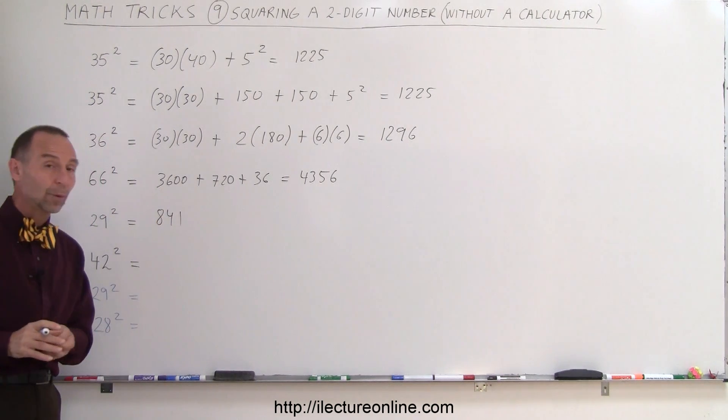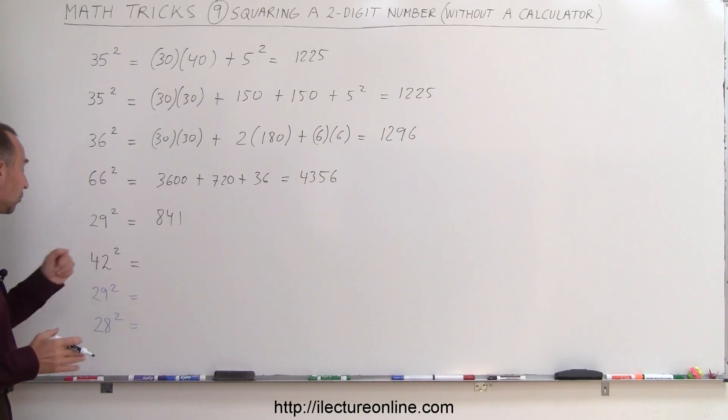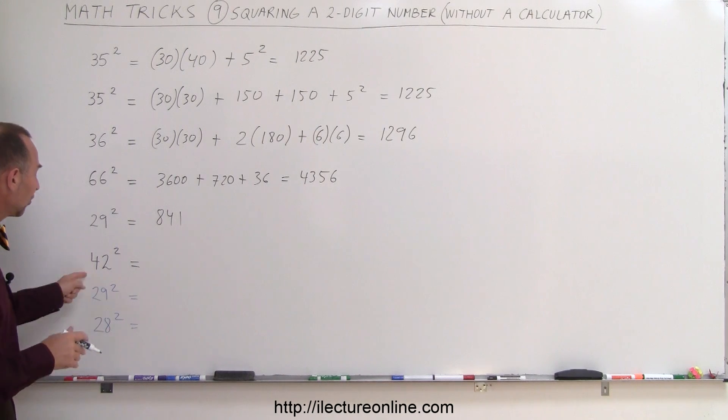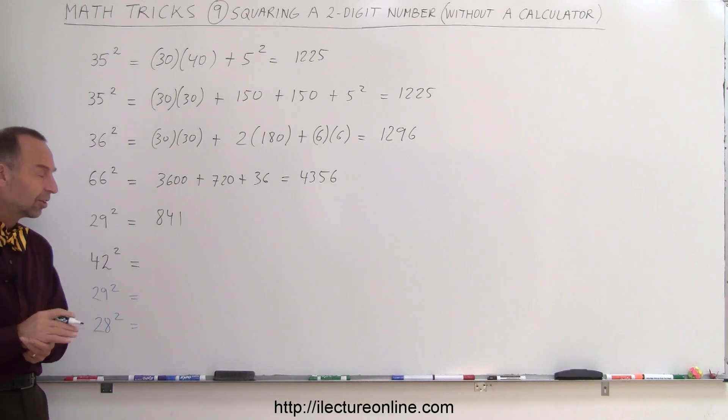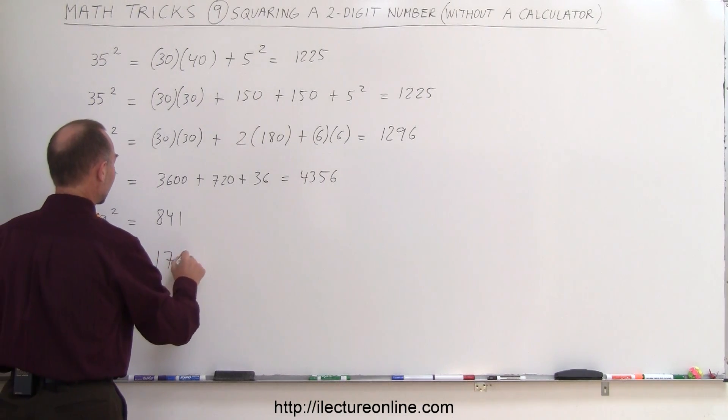And last one here, 42 squared, so we do 40 times 40, which is 1600, 40 times 2, which is 80, times 2 is 160, so 1600 plus 160 is 1760, plus 4, that would be 1764.